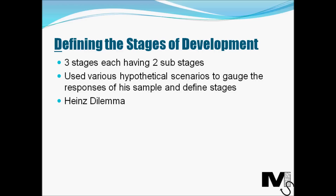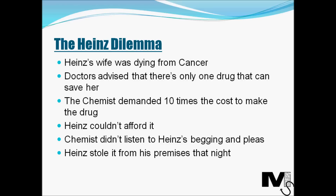One of the most popular hypothetical scenarios that he used was the Heinz Dilemma. This is the story of Mr. Heinz, whose wife was dying from a very specific type of cancer. The doctors advised that there was only one very specific drug that could actually save her, and there was only one chemist who had this drug. Mr. Heinz went to the chemist, who demanded ten times the cost to actually make the drug — if it cost a hundred pounds to make, he charged Mr. Heinz a thousand pounds. Mr. Heinz couldn't afford it.